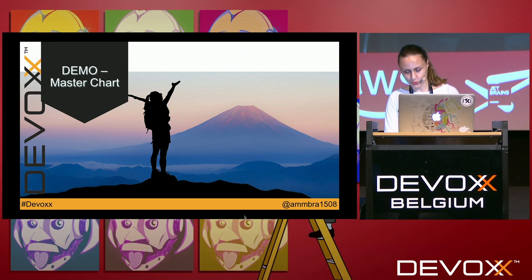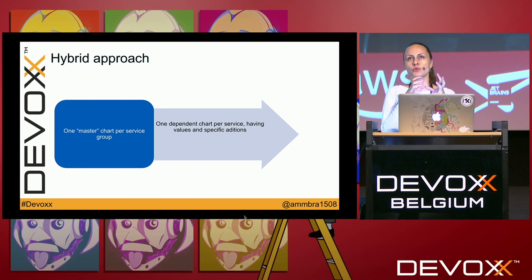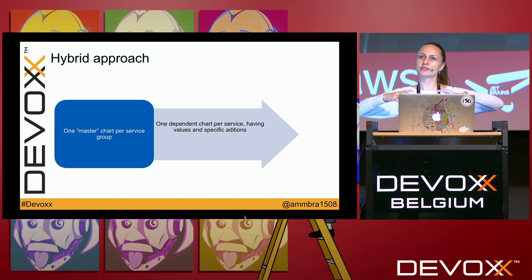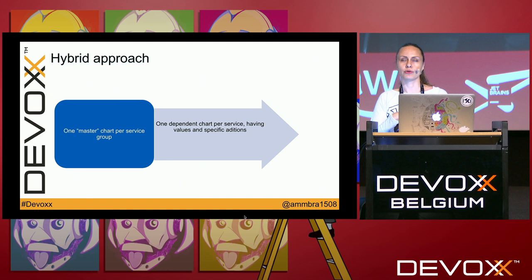There's a third way — a hybrid approach — where you keep a chart per service but group your charts and have a master chart for each group. This reduces coupling, so you're not installing your entire platform all at once, but installing groups of charts together. This is much more modular and easier to manage when dealing with many microservices.